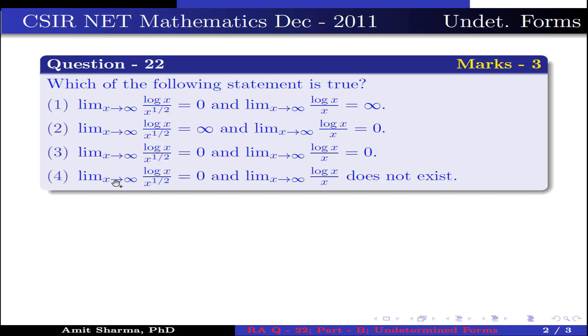Option 3: limit x approaches to infinity of log x divided by x to the power half is equal to 0, and limit x approaches to infinity of log x by x is equal to 0. Option 4: limit x approaches to infinity of log x divided by x to the power half is equal to 0, and limit x approaches to infinity of log x by x does not exist.